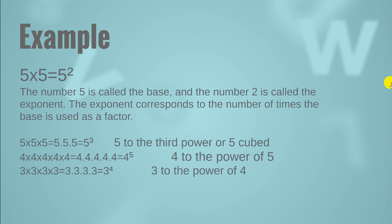So in this example, you can see the number 5 is called the base and the number 2 is called the exponent. The exponent corresponds to the number of times the base is used as a factor, which means that the number of times the base is written — that counting will be the number of exponents.